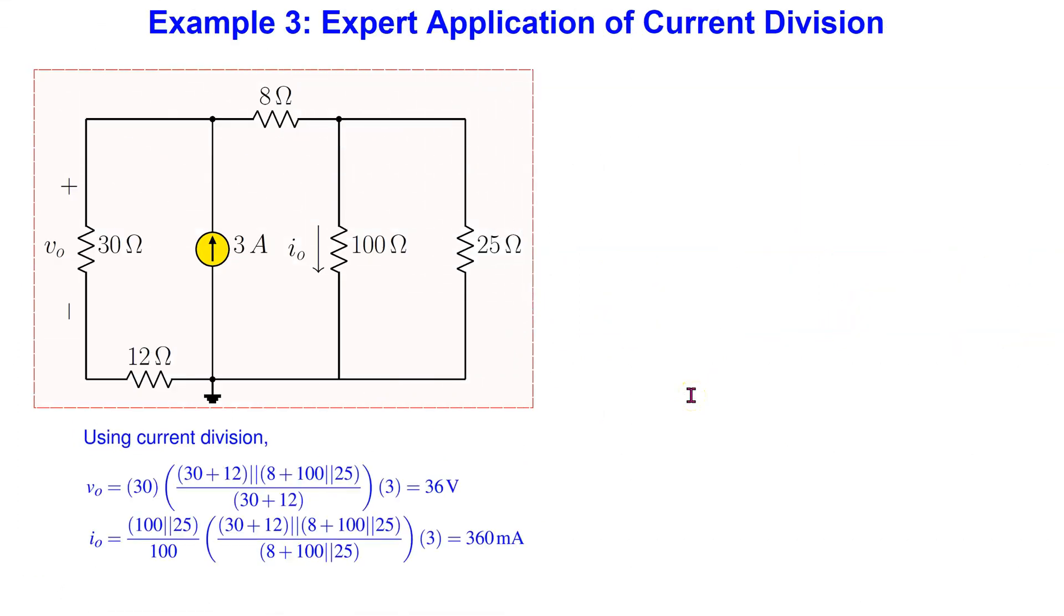Finally, we consider a challenging example. In this given circuit, the desired variables are V0 and I0.